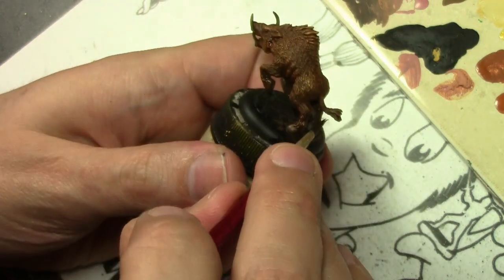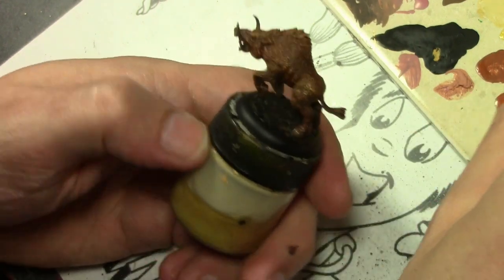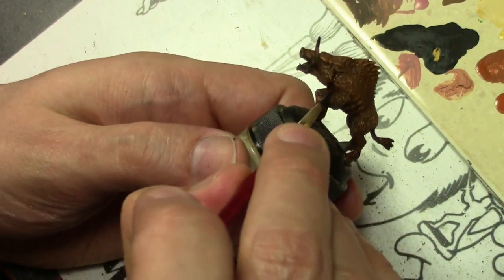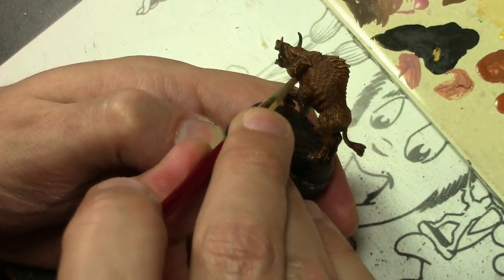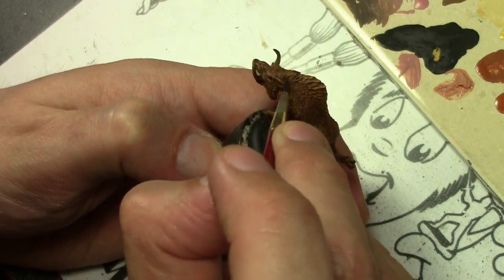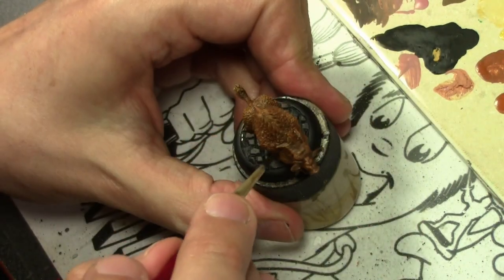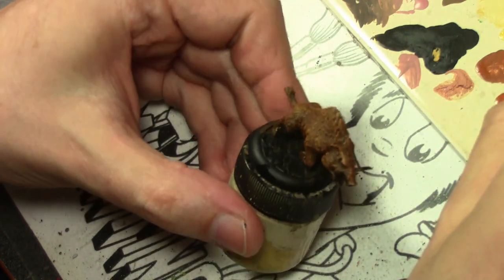I'm going to skip over painting the fleshy bits on the front, the ears and the snouts, because you already seen that. Suffice it to say it's just the base colors once again mixed with Beige Red to bring it up to that fleshy tone.